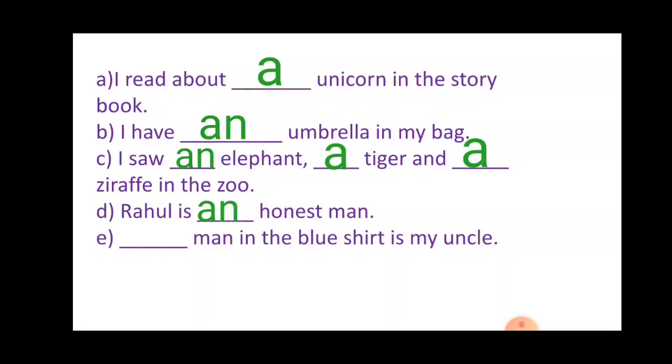Last one: dash man in the blue shirt is my uncle. Now we are here talking about the particular man. That's why the will be used. We are not talking about any man. Then we can say a man. I have seen a man in the road. But we are talking about the man who is wearing blue shirt. So the will be used.